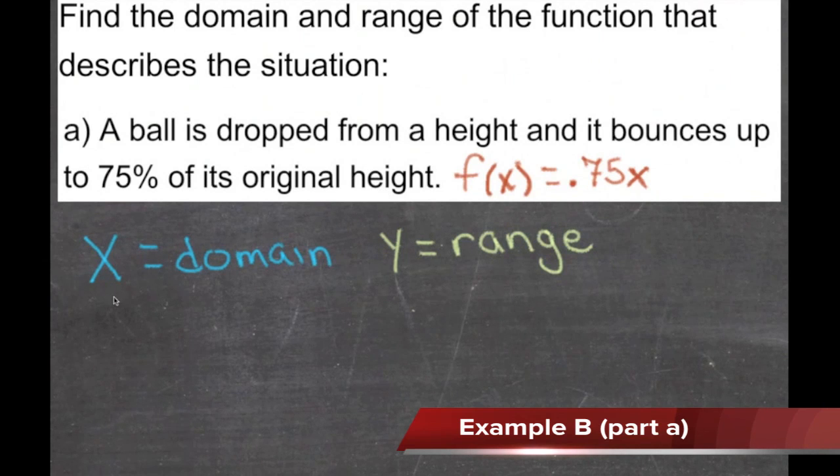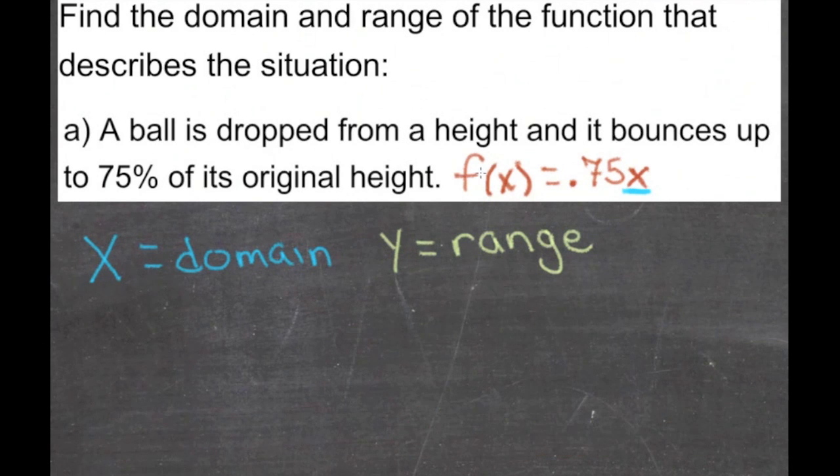we need to identify what numbers could go into this function and what numbers could come out of the function. The domain, x, is always the set of numbers that could be put into the function. Then we do something to those numbers and we get an output which is the range or the f(x) value. Sometimes the y value, sometimes the f(x) value. They both mean the same thing.